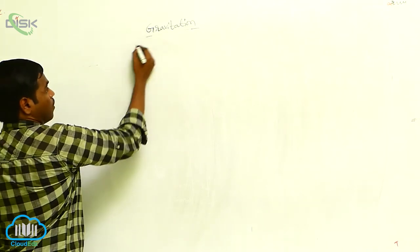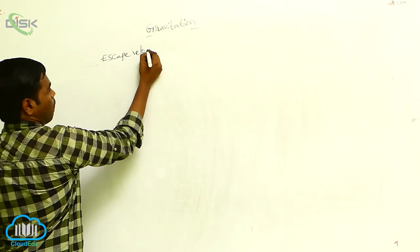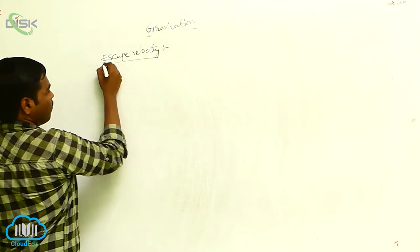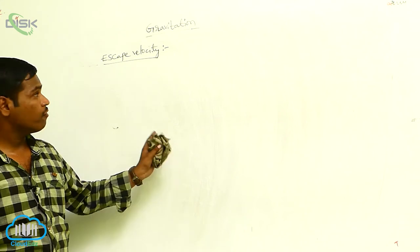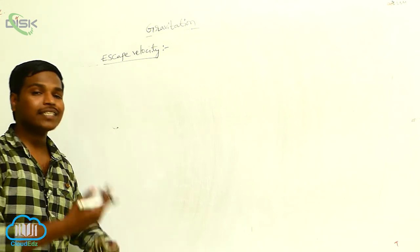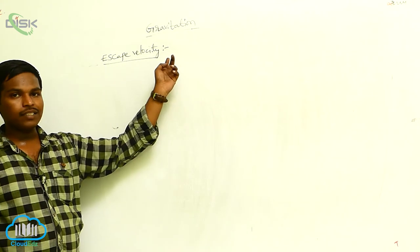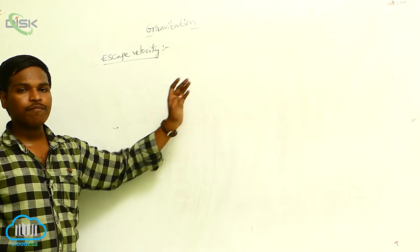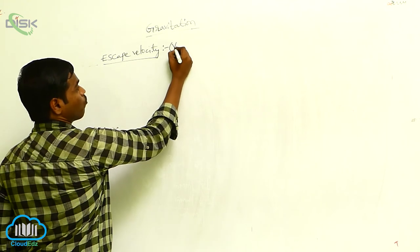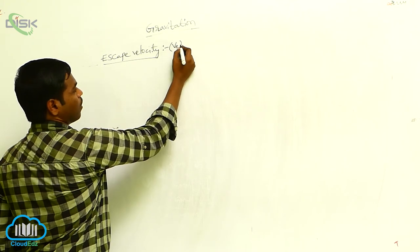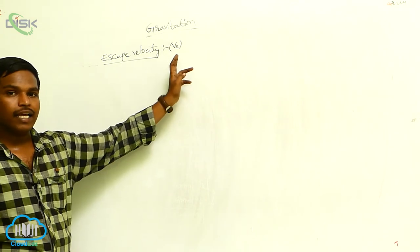Escape velocity means the minimum velocity required for an object to escape from the Earth's gravitational field. It is denoted with V_E. Now we have to calculate the escape velocity.